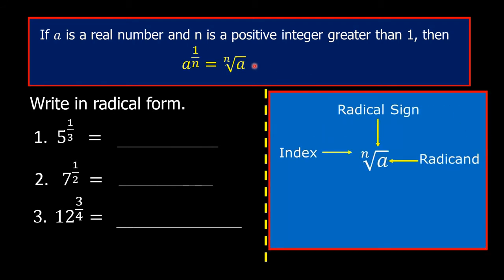n in the radical form is called the index. This symbol is called the radical sign. A, which is written under the radical sign, is called the radicand. Notice that a, which is the base in the exponential form, is the radicand in the radical form. The denominator of the fractional exponent, which is n, is the index in the radical form. The numerator one here is the exponent of a in the radical.